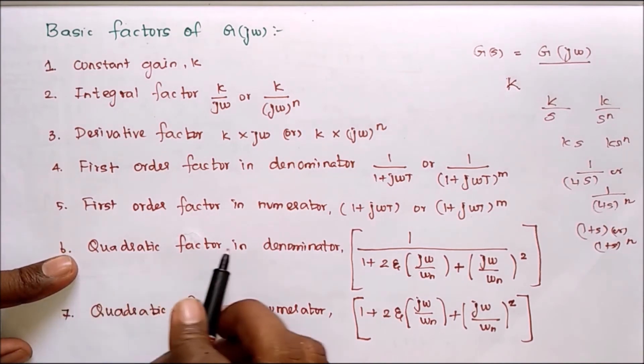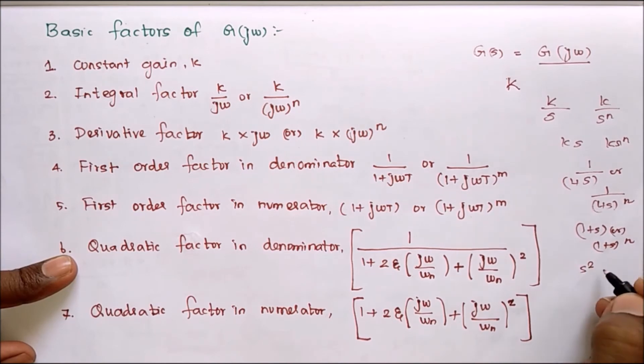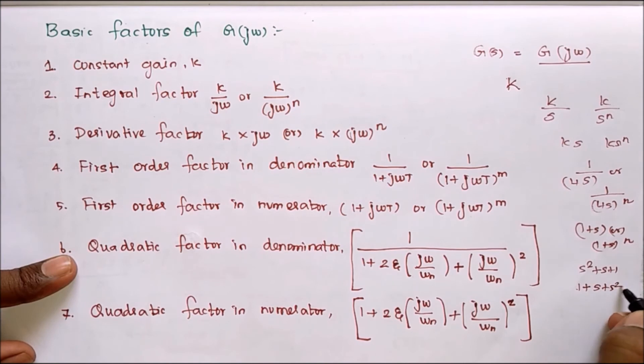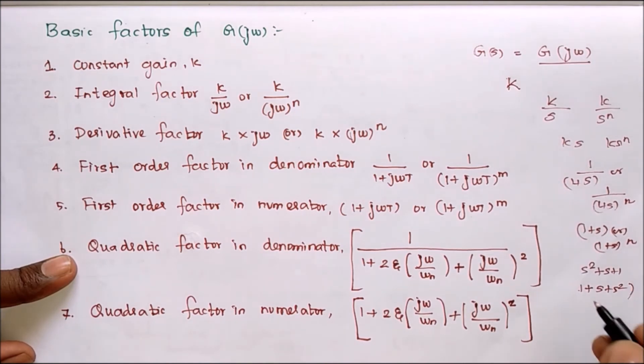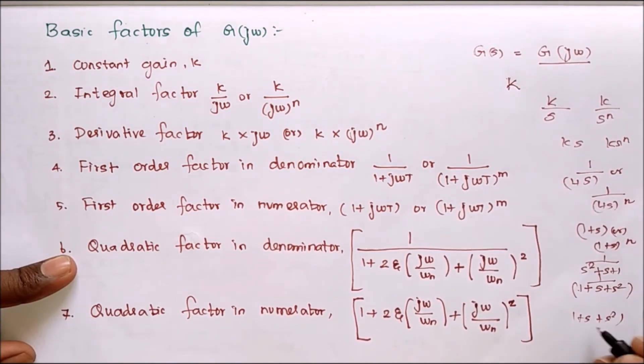Next quadratic factor in denominator. Actually we will have a quadratic equation like S square plus S plus 1. Now suppose here 5, we have to take 5 outside, then arrange 1 plus S term plus S square term. Similarly it is in the denominator 1 by S square term. If it is numerator means 1 by (S plus S square).